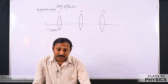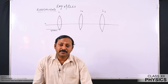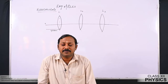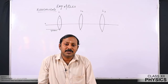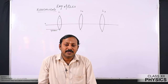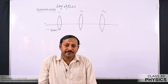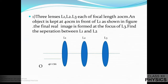Hello students, we are dealing with numericals of ray optics. In continuation, we will do some more numericals today. Here we have the first numerical on your screen. The numerical is: 3 lenses L1, L2, L3, each of focal length 20 centimeter.